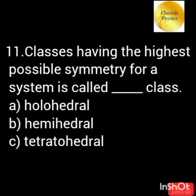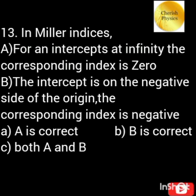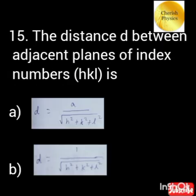The set of symmetry operations emerging from the arrangement of point groups that forms a group of its own is called the space group. Classes having the highest possible symmetry for the system are called holohedral classes. Classes having less than full symmetry are called merohedral classes. In Miller indices: a plane parallel to one coordination axis has index number 0 for that direction; a plane passing through the origin is defined in terms of a parallel plane with non-zero intercepts. The distance d between adjacent planes of index number hkl is given by the interplanar spacing formula.